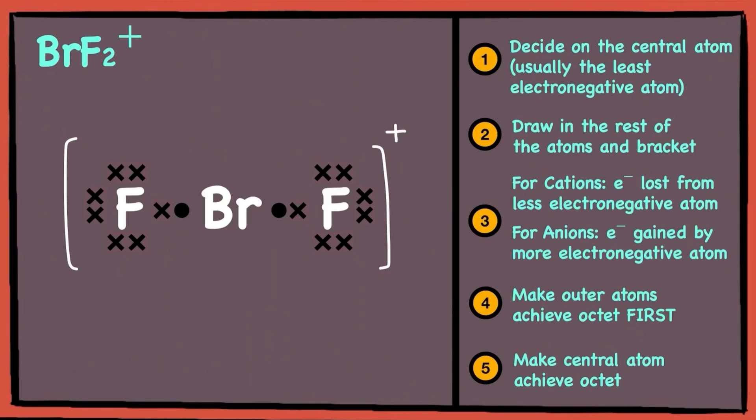Since bromine has lost 1 electron, and used up 2 electrons to make the outer fluorine atoms achieve octet configuration, it has 4 valence electrons left, which we can draw in as 2 pairs of electrons. So, this is how the dot-and-cross diagram for BrF2+ will look like.